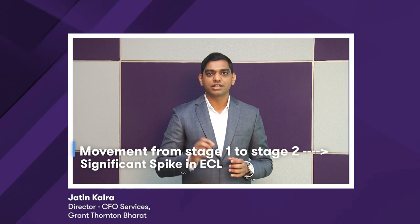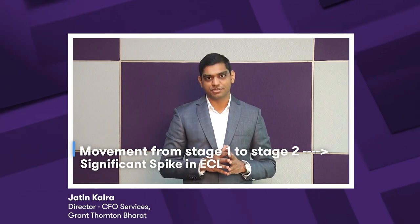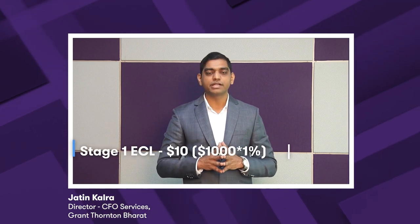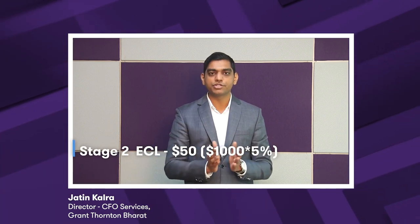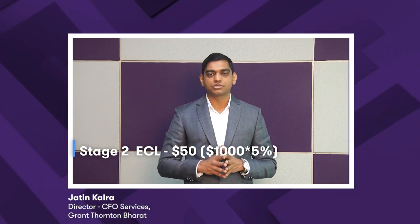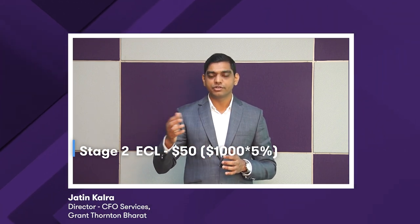As can be expected, any movement from stage 1 to stage 2 would result in a significant spike in provisions. Let's imagine a $1,000 loan with 5 years remaining and a 1% loss rate per annum. In stage 1, the ECL provision would be $10 — that is 1% on a $1,000 loan. However, if it was in stage 2, you would need to create provisions for the entire 5 years remaining. So 1% per annum for 5 years gives you 5%, and 5% on $1,000 gives you $50 — a five-times increase from the provision held in stage 1.